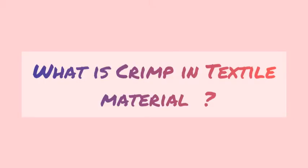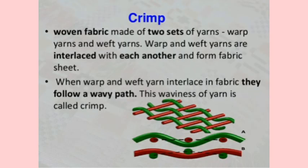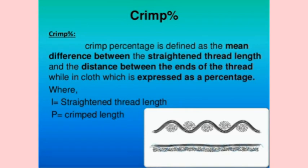Hello all, today we are going to learn about crimp in textile material. In woven fabric, warp and weft yarns are interlaced with each other to form a fabric. They follow a wavy path; this waviness of yarn is called crimp. Crimp percentage is calculated as the mean difference between straightened thread length and the distance between the ends of the thread while in cloth, expressed as a percentage.